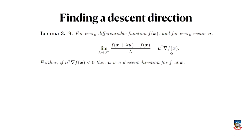The important thing is the line underneath, which says: if I find a direction u and calculate u^T times the gradient of f, and if that's less than zero, then u is a descent direction. So long as I can find a u that satisfies u^T · ∇f(x) < 0, I've got a descent direction. I can do gradient descent and head downhill.